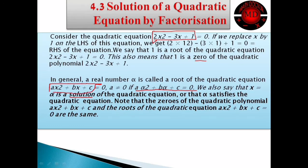We also say that x equals alpha is a solution of the quadratic equation. We call it a zero, root, or solution. Alpha is a solution of the quadratic equation, or we say alpha satisfies the quadratic equation. Alpha is any variable whose value we choose with respect to our quadratic equation.